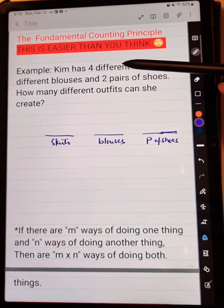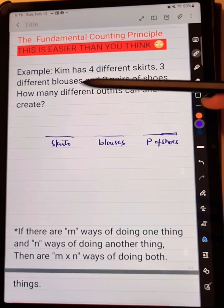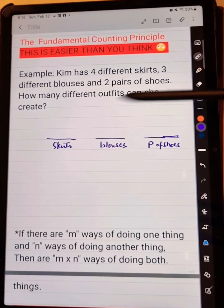Look at this problem here. Kim has four different skirts, three different blouses, and two pairs of shoes. How many different outfits can she create?